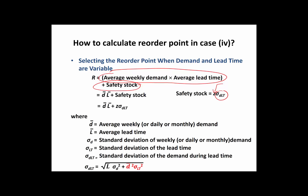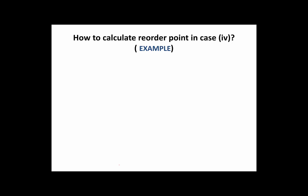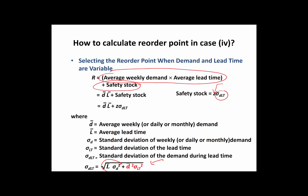Sigma-DLT is given by a specific expression. If you take a closer look, the first term in this expression is exactly the same as the variance of demand during the lead time from Case 3. Since in this case the lead time is also varying, the buyer has to stock more — and therefore the safety stock increases. That increase in safety stock is represented by the second term in the expression.